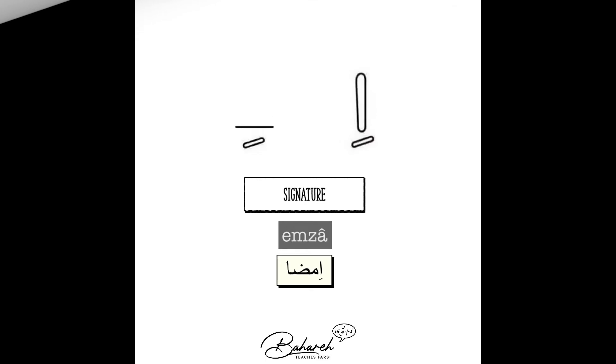There are two forms of the short vowel E depending on their position in a word. Notice the initial sound in this example: Signature.